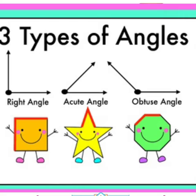And the third one is obtuse angle. Obtuse angle is more than 90 degrees — joh 90 degrees se zyada hota hai. It comes outwards — bahar ki taraf angle ata hai. It is not straight like right angle. So: right angle is exactly 90 degrees, acute angle is less than 90 degrees, and obtuse angle is more than 90 degrees. So it is called obtuse angle.